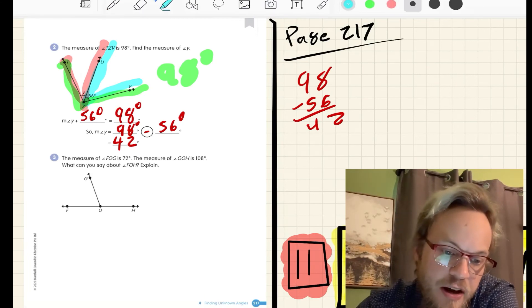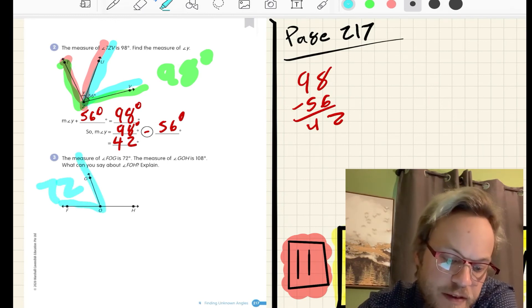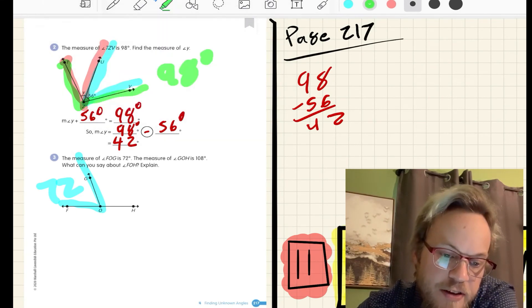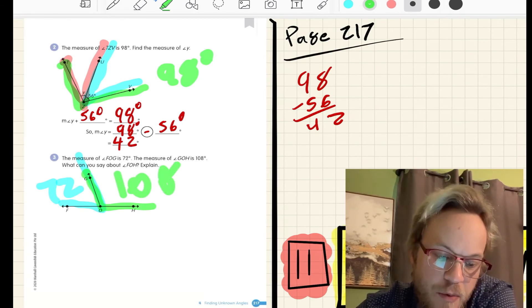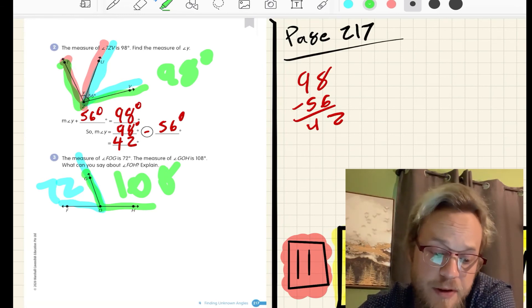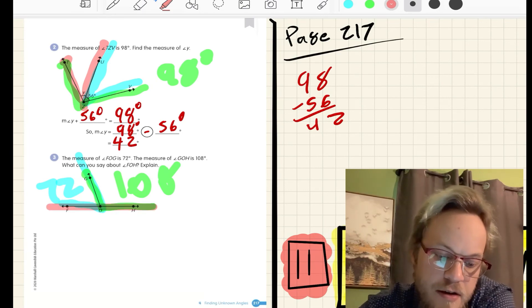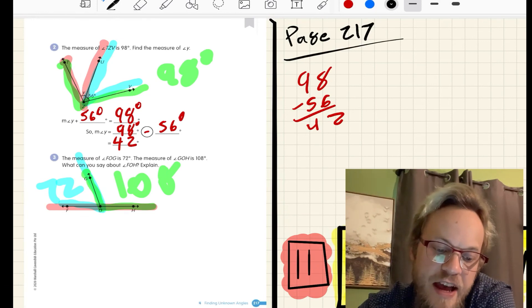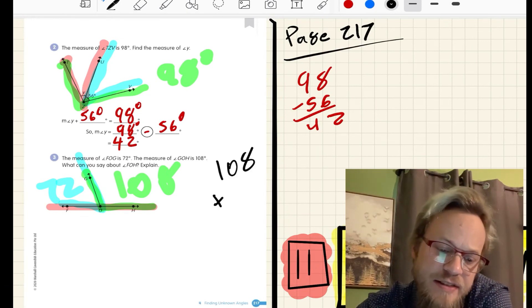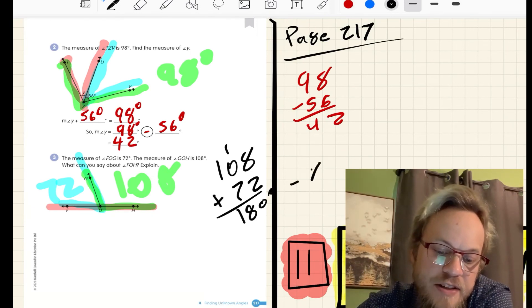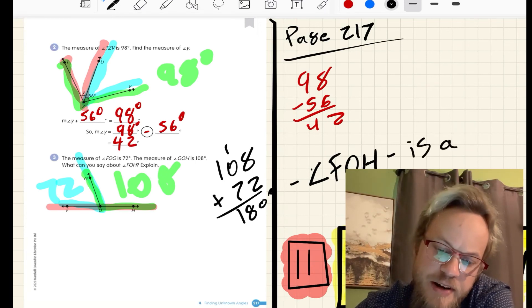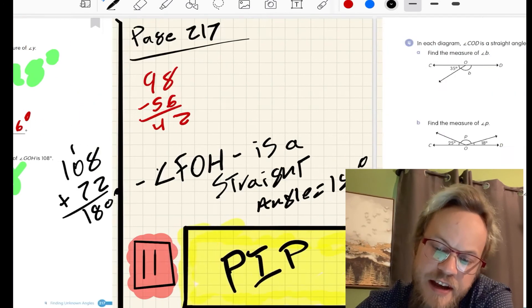Problem number three. The measure of FOG, F-O-G, is 72 degrees. The measure of GOH, G-O-H, is 108 degrees. What can we say about F-O-H? Well, F-O-H, this bottom line here, we know that that is a straight angle because it equals 180 degrees. If I add 108 plus 72, 8 plus 2 is 10, 10 plus 70 is 80, 180. Angle F-O-H is a straight angle equal to 180 degrees.